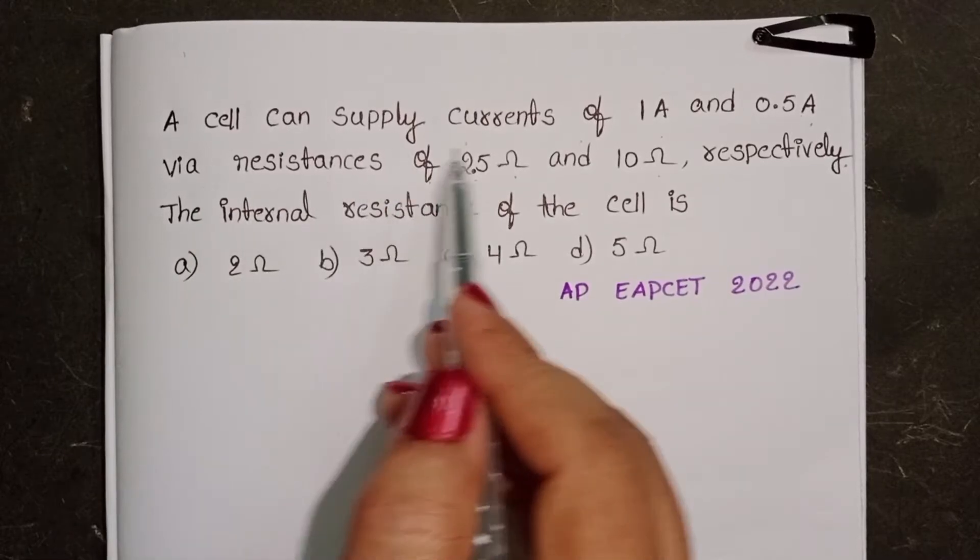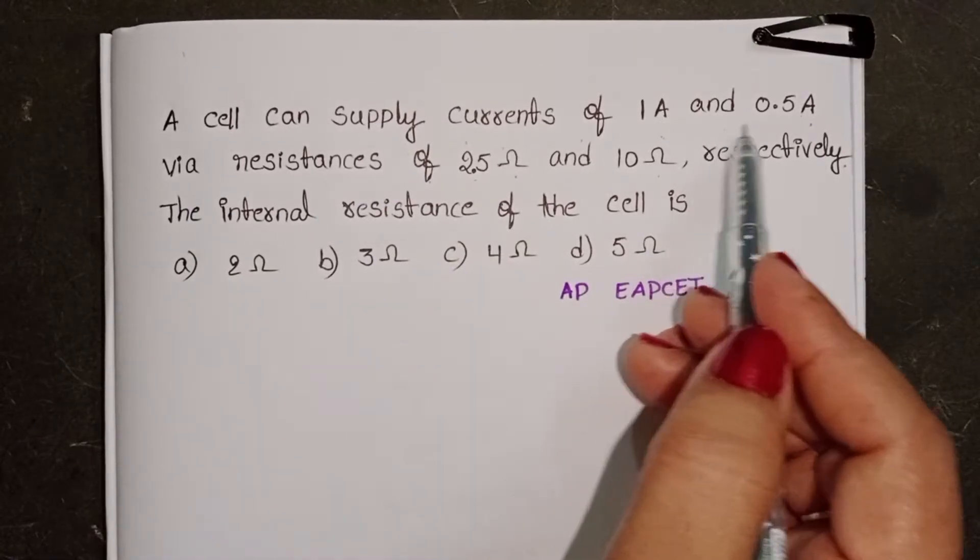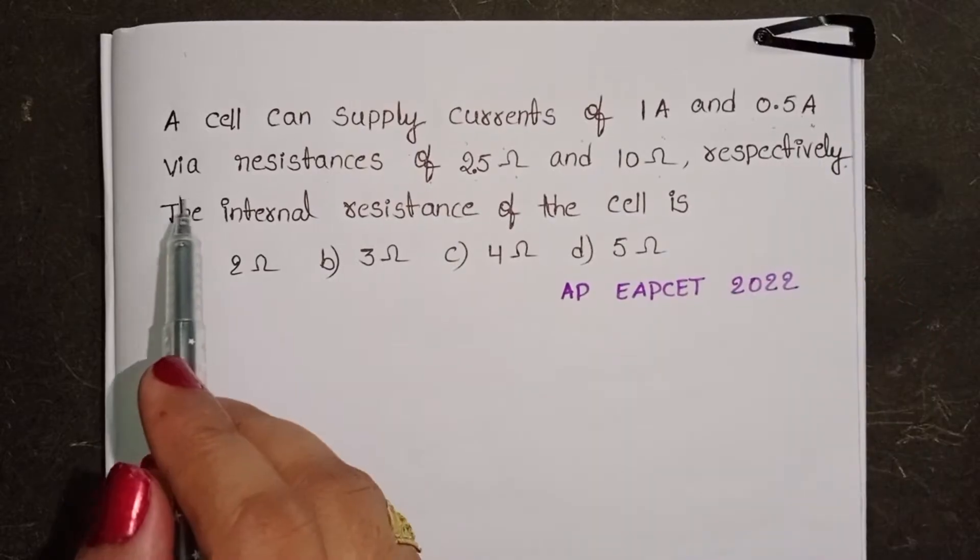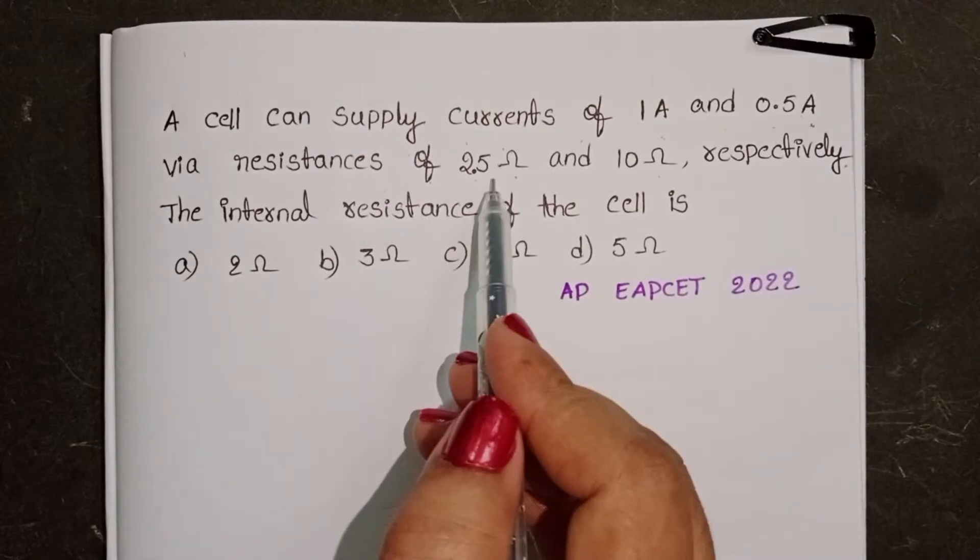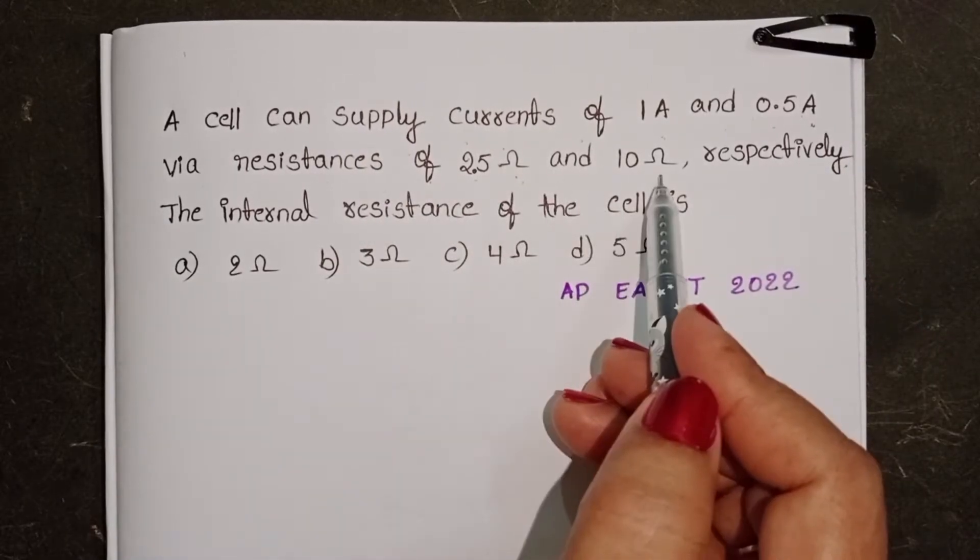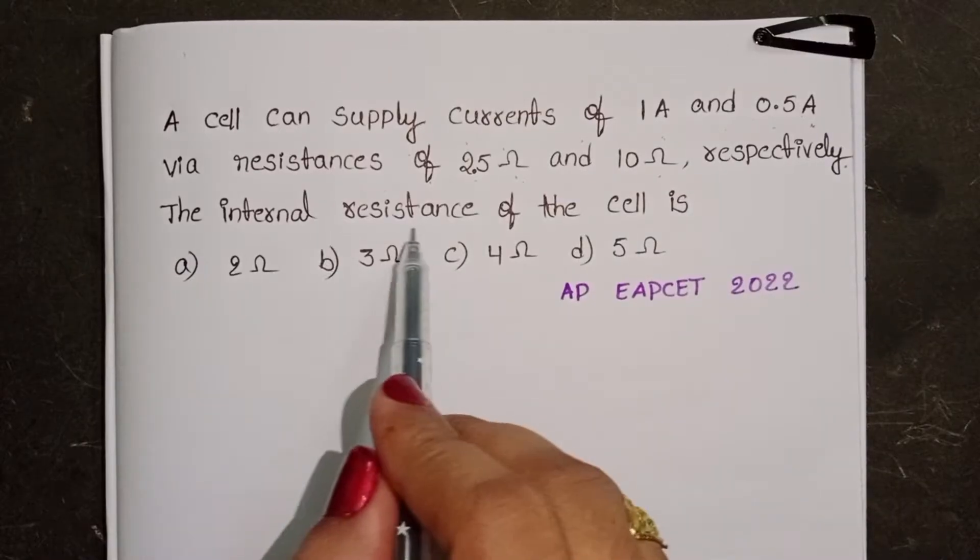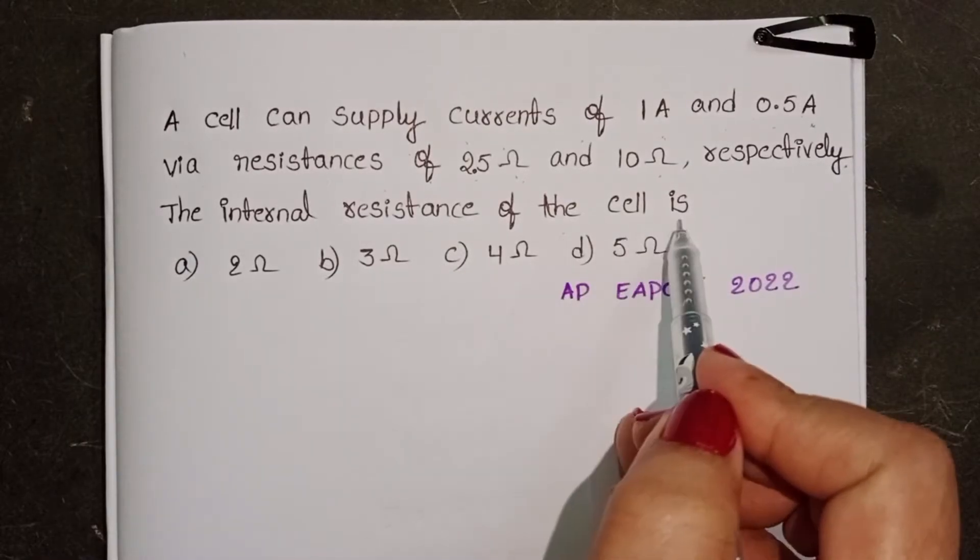A cell can supply currents of 1A and 0.5A via resistances of 2.5 Ohm and 10 Ohm respectively. The internal resistance of the cell is.